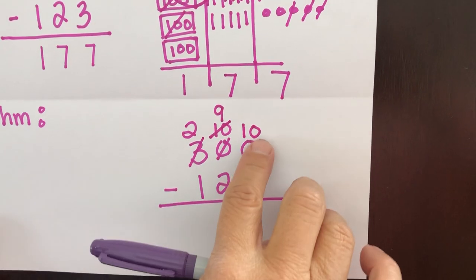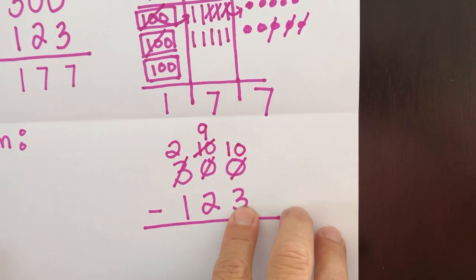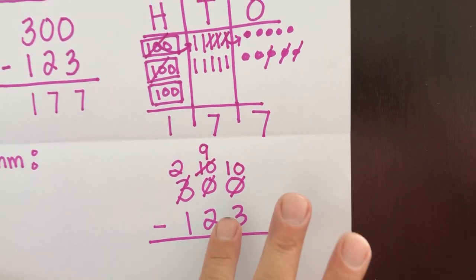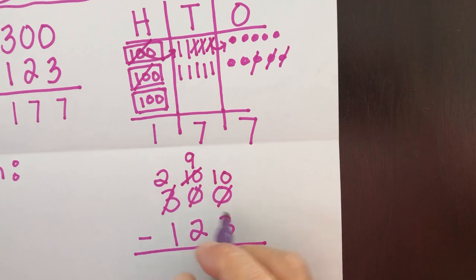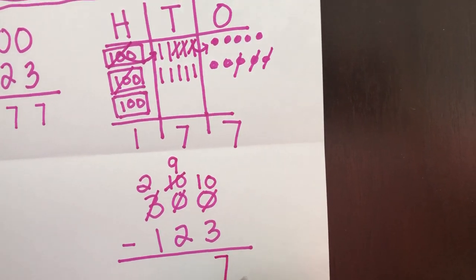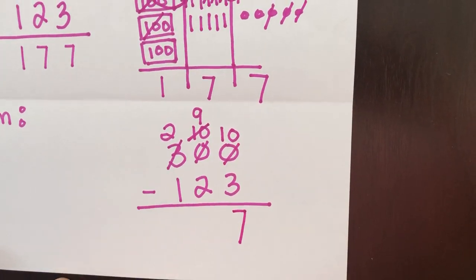Well, now I can subtract. So if I have 10, and I take away three, I count backwards. Nine, eight, seven. I'll answer that.